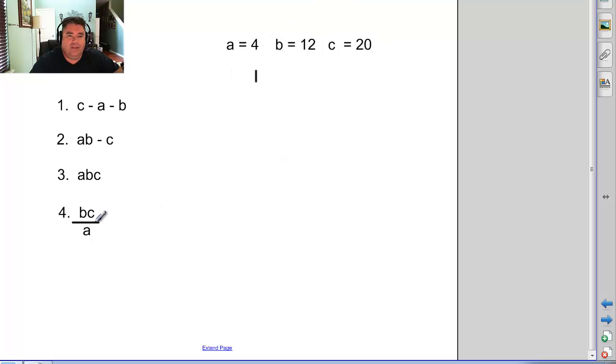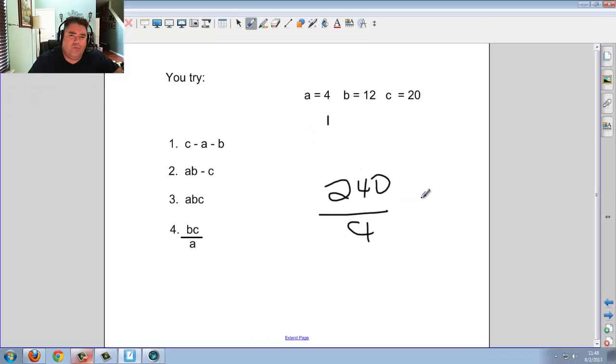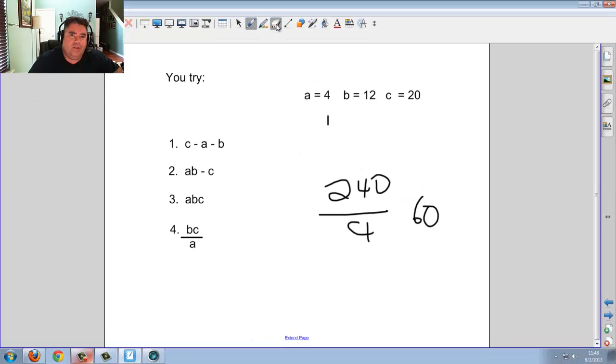And finally, the last one, BC divided by A, you have to take B times C first, which is going to give you 240, divide by that A, which is 4. 240 divided by 4, I believe will give you 60. And there you have it. Hopefully, you got all four right.